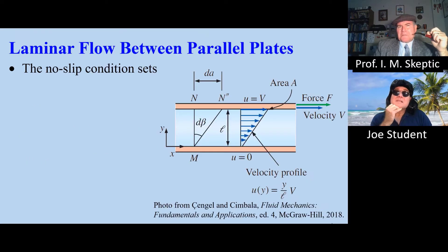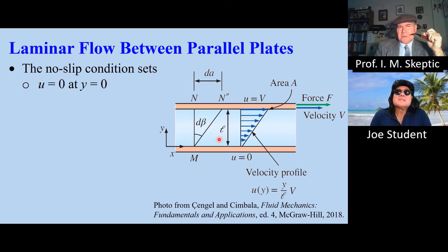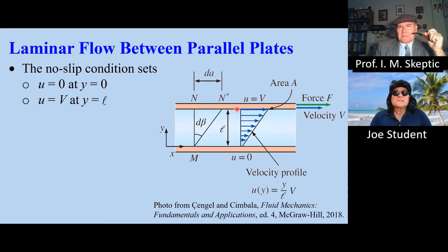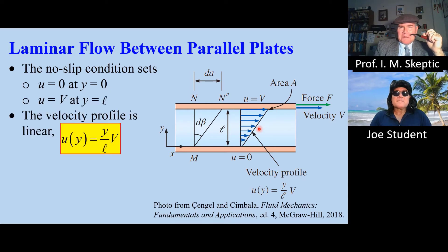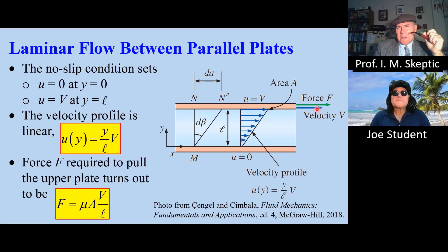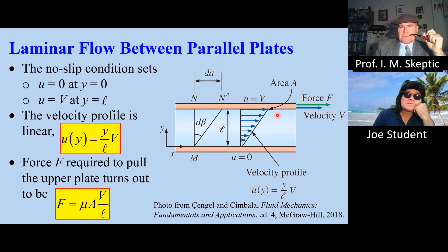Consider a thin layer of fluid between two parallel plates. The no-slip condition sets u equals zero on the bottom plate and u equals v on the top plate. The velocity profile turns out to be linear. The force required to pull the upper plate is mu times the surface area of the plate times v over L.